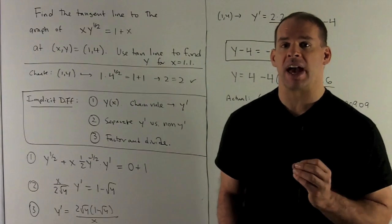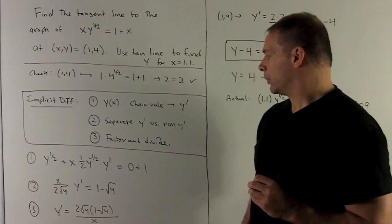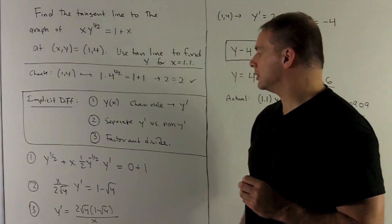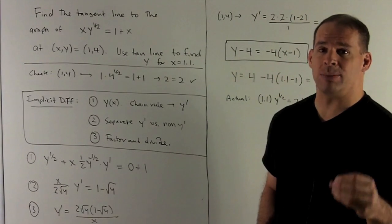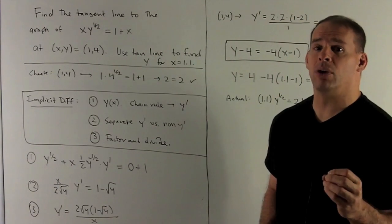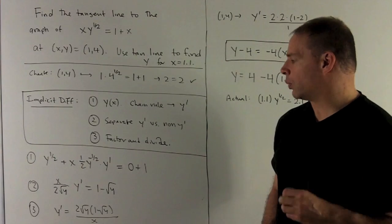On the other side, we have 1+x. If we take its derivative, we're going to get 1. So what are we left over with? It's going to be y^(1/2) + x times 1/2 y^(-1/2) y' = 1.